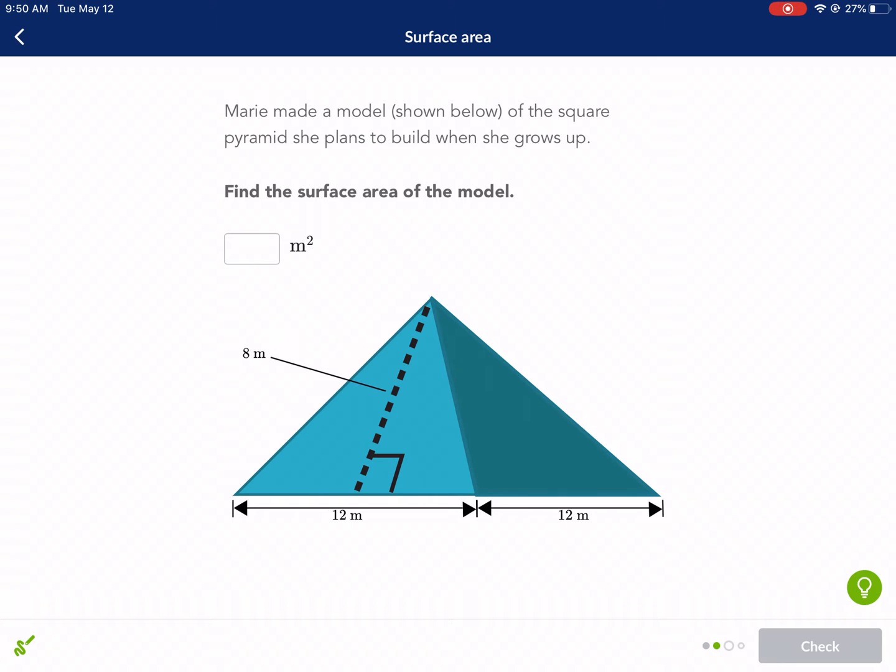It says we got the first one wrong, but really we got it right. Just, I know that's probably bothering some people. It's bothering me that the first one is grayed out. All right, we got a second chance here. Marie made a model of the square pyramid she plans to build. Wow, Marie's got big aspirations too.